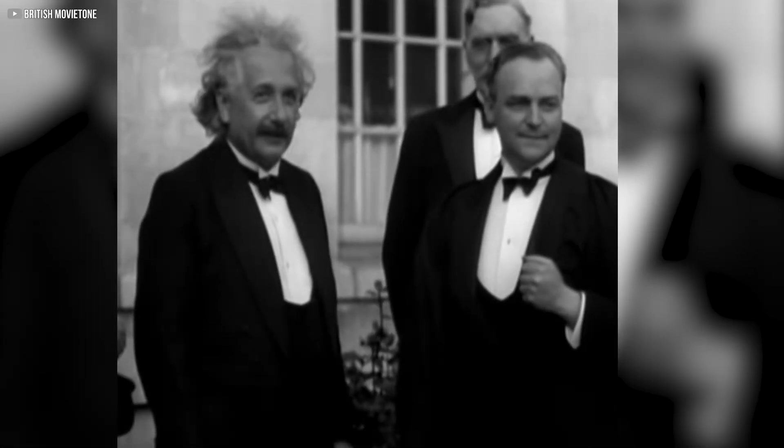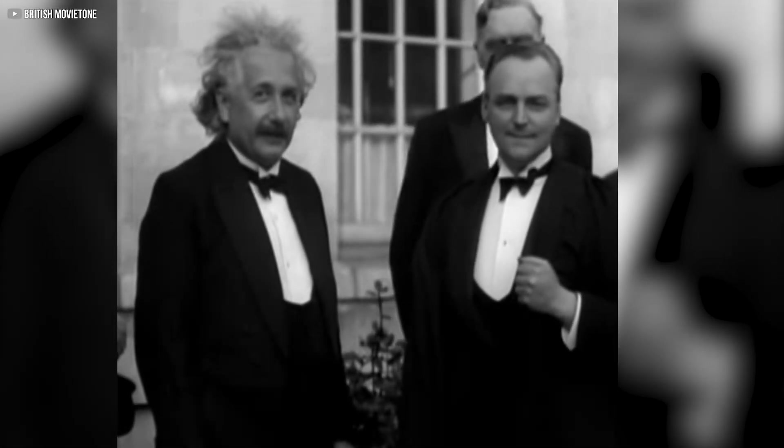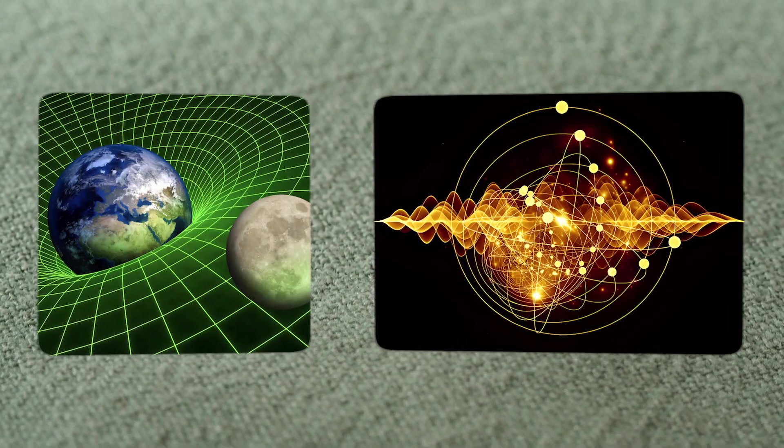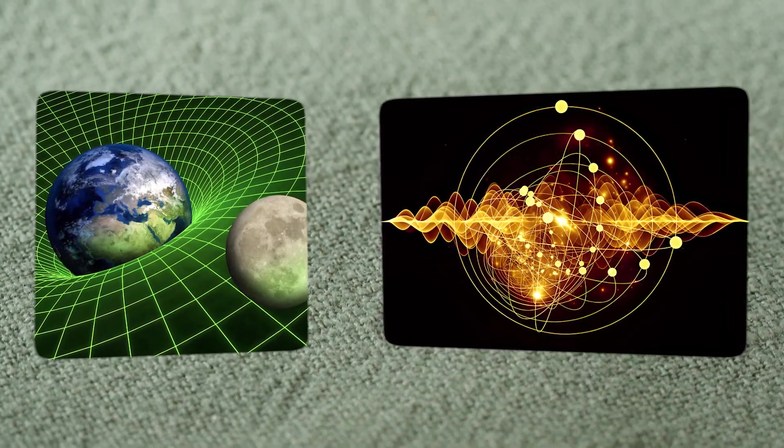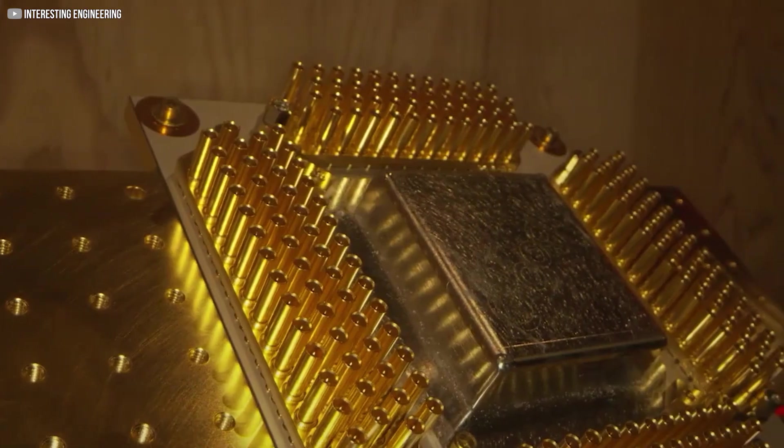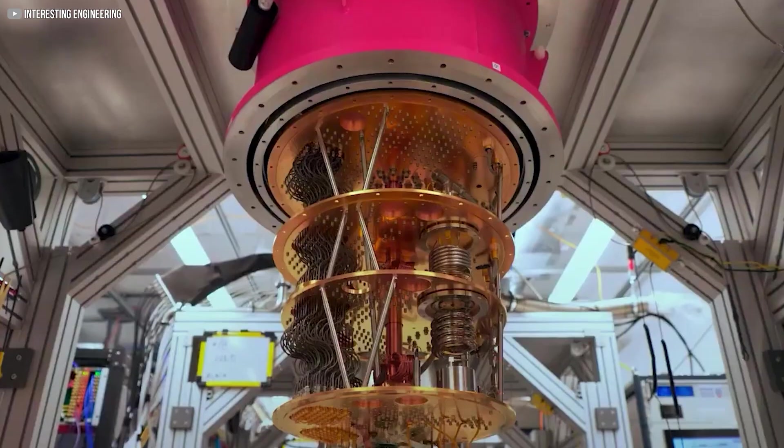Albert Einstein spent his final years searching for a theory of everything, a single equation that could unify gravity and quantum mechanics. But the challenge was immense. The math is too dense. Even our fastest supercomputers couldn't unravel it.